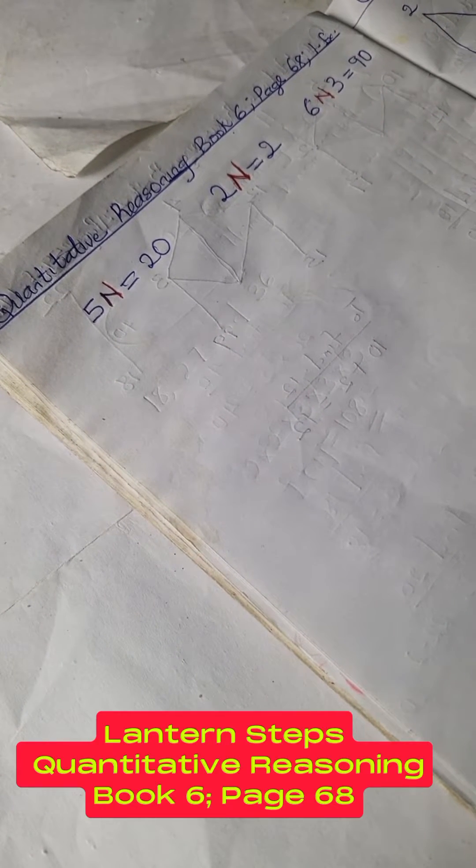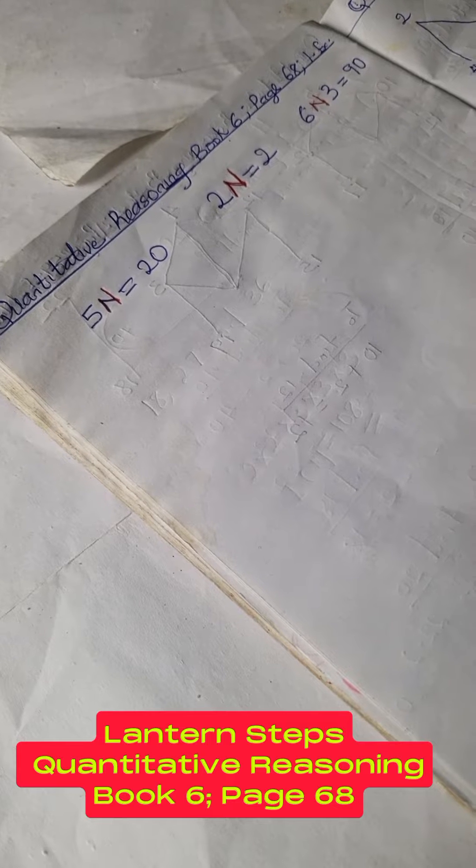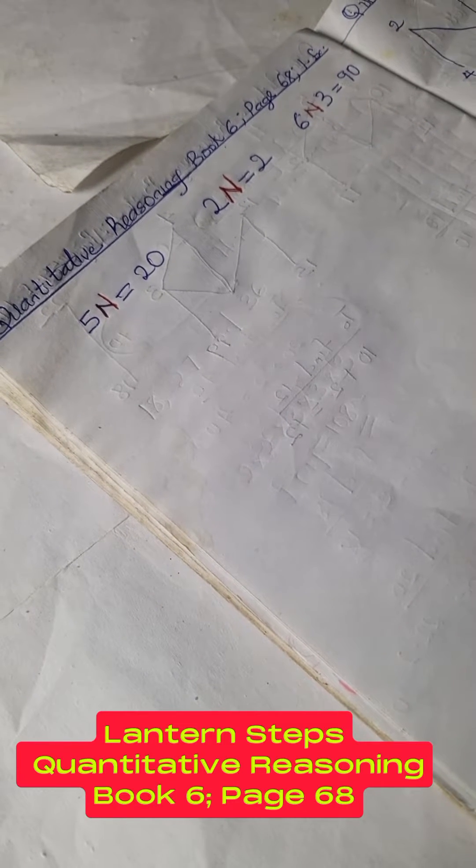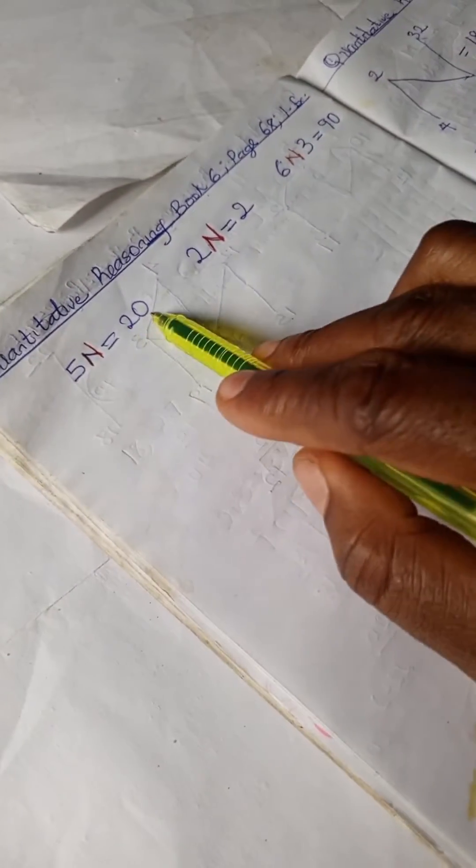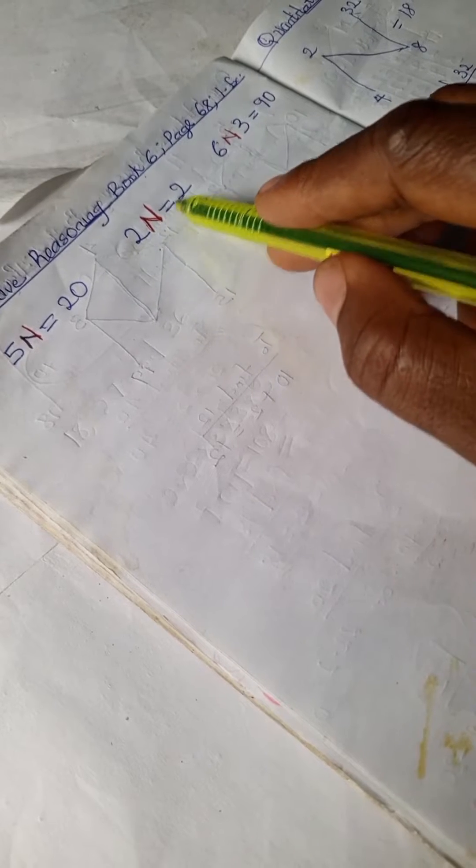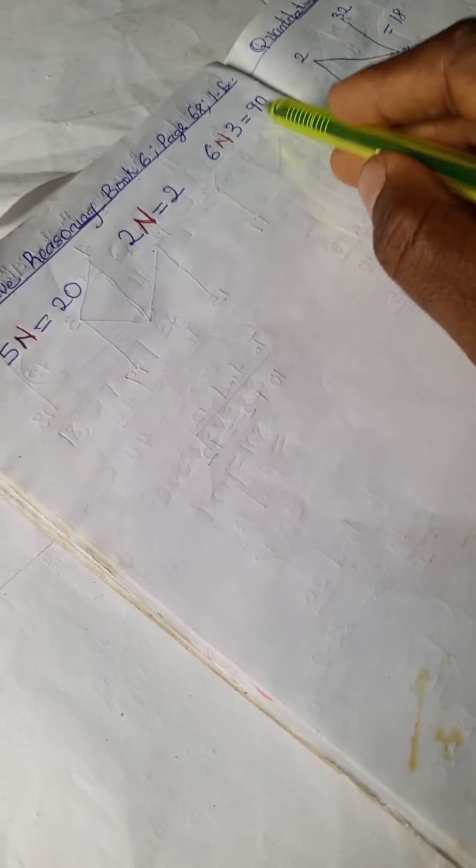Welcome to quantitative reasoning solution. We have this problem from Lantern Step quantitative reasoning book 6, page 68. Looking at this we have 5n equals 20, 2n equals 2, and here we have 6n times 3 equals 90.